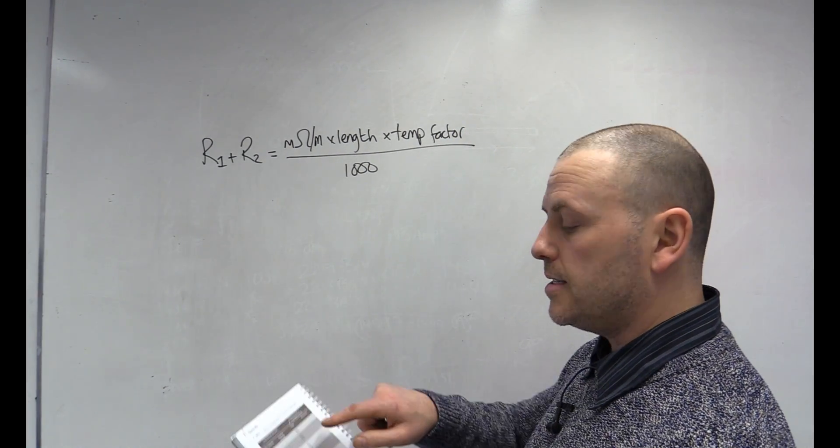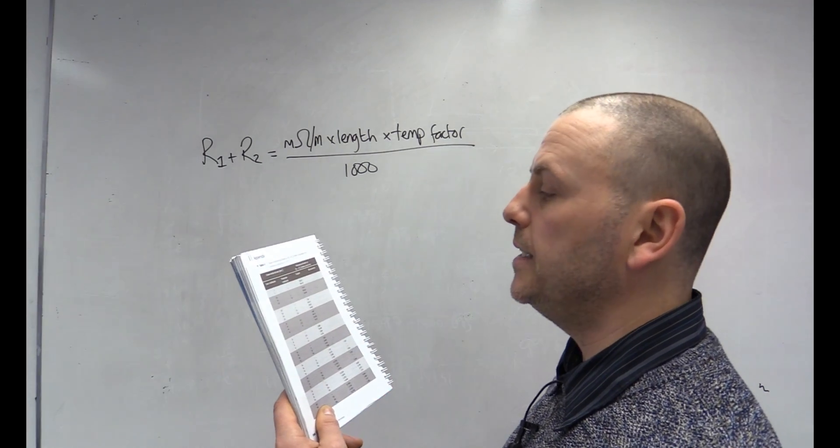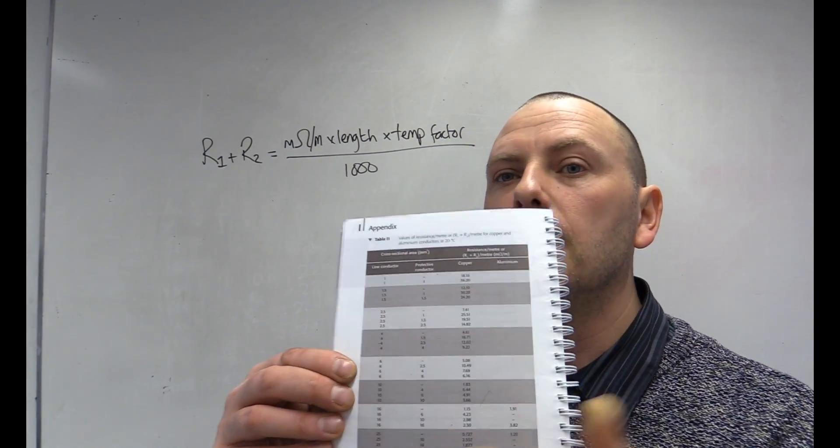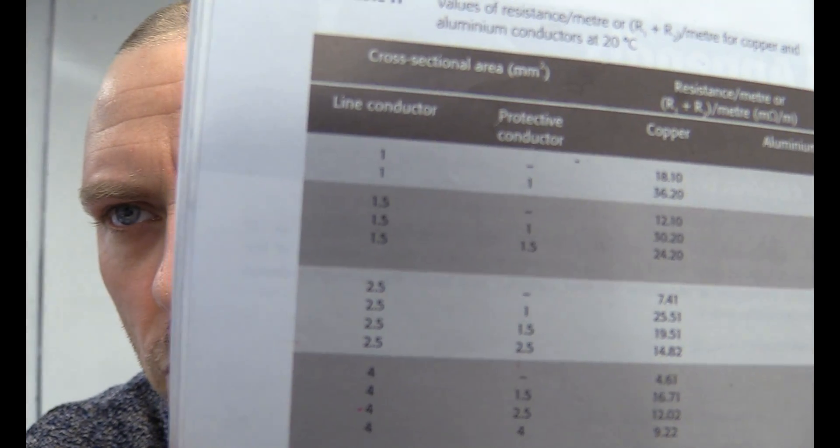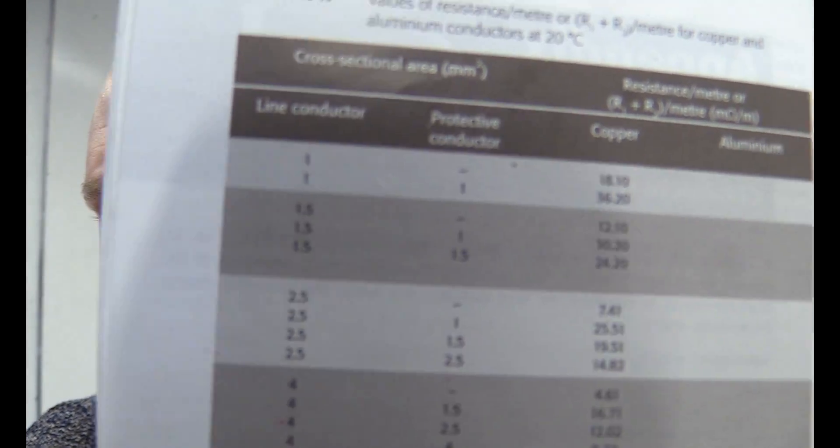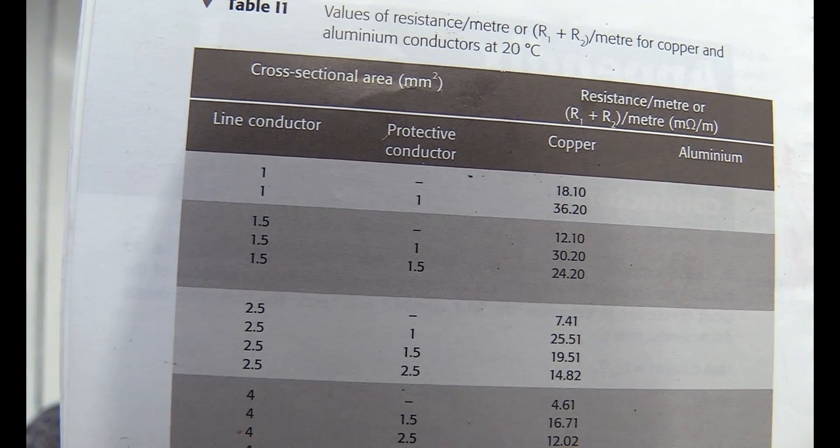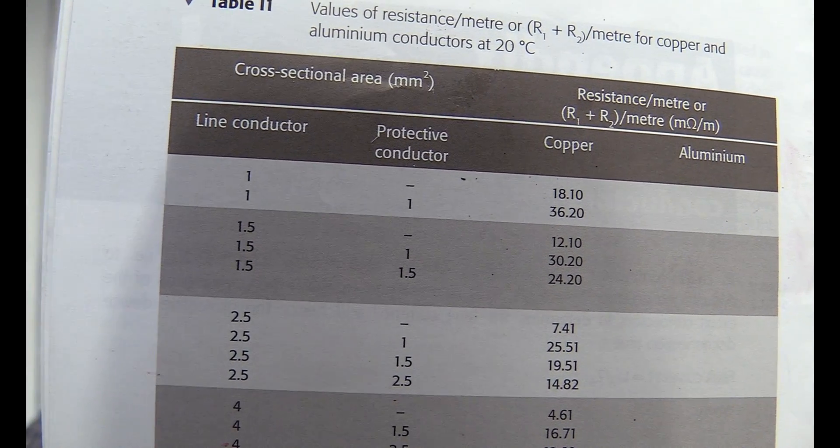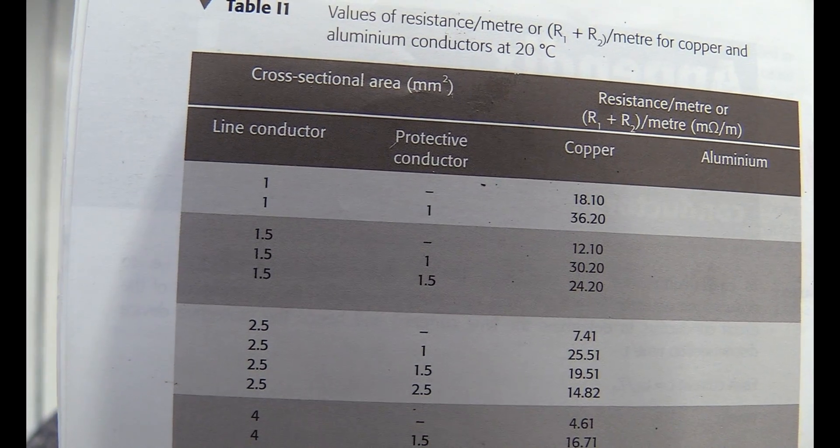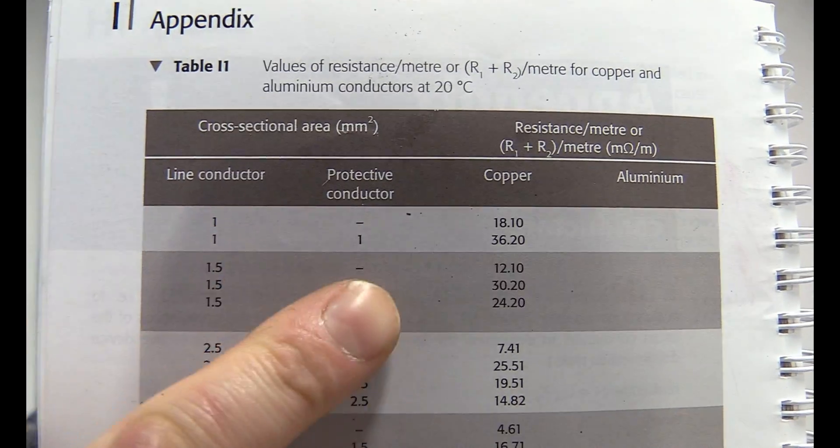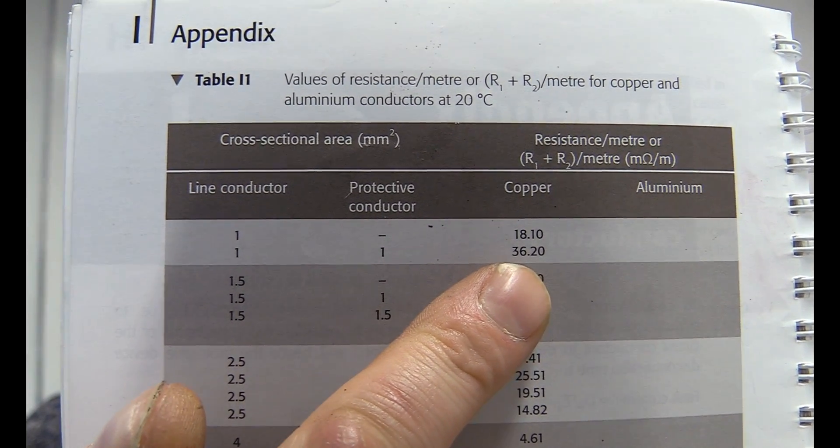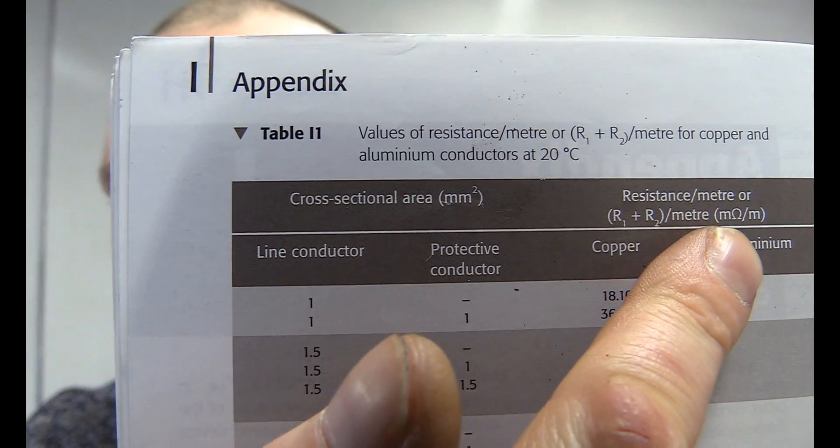Now, this table gives us a milliohm per meter value for different types of cables. You can see for a 1mm line conductor and a 1mm protective conductor, we get a value of 36.2 milliohms per meter.